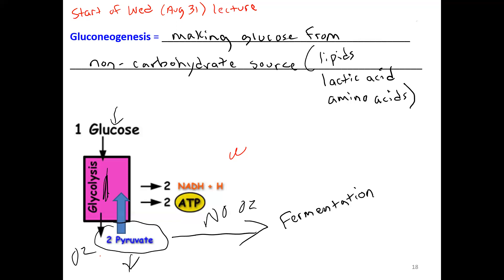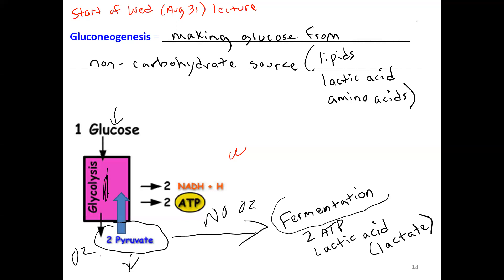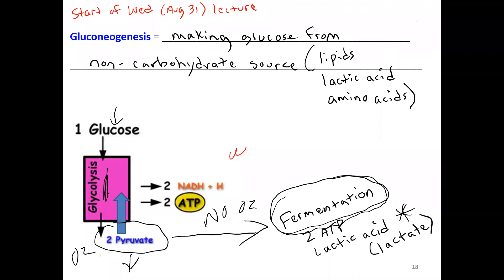If we remember fermentation — what pyruvate goes through if there's no oxygen — it will produce a little bit of ATP and basically lactic acid, or lactate. Our skeletal muscles can go through anaerobic respiration quite regularly. If you push your skeletal muscles hard and feel that burn, you're feeling lactic acid buildup. When that lactic acid gets into the bloodstream it can make your blood become acidic — acidosis. The body has to metabolize that lactic acid to correct blood pH.